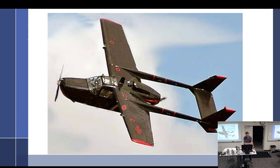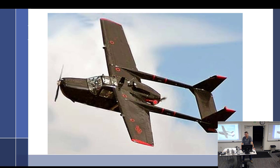This is an O2 — it's the military version of the Sky Master, which is what this propeller is off of. Up here is the tractor configuration, so this side of the prop will be the face and this will be the back. Then back here this part is going to be the back and this part will be the face.